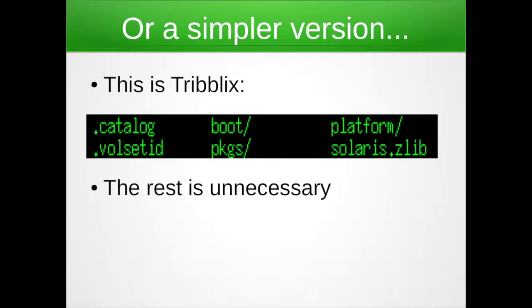If you look at the root of Tribblix, it looks like this — there's only half a dozen things there and it's much simpler. But it turns out everything else is just junk that nobody bothered to delete and clean up. Pretty much the rest is completely unnecessary — doesn't take up a lot of space, they're just empty directories, but it's just a mess. So what are these? We've got a .catalog file, .volset, boot, packages, and the Tribblix things I know, plus platform and all these Z-lib files.